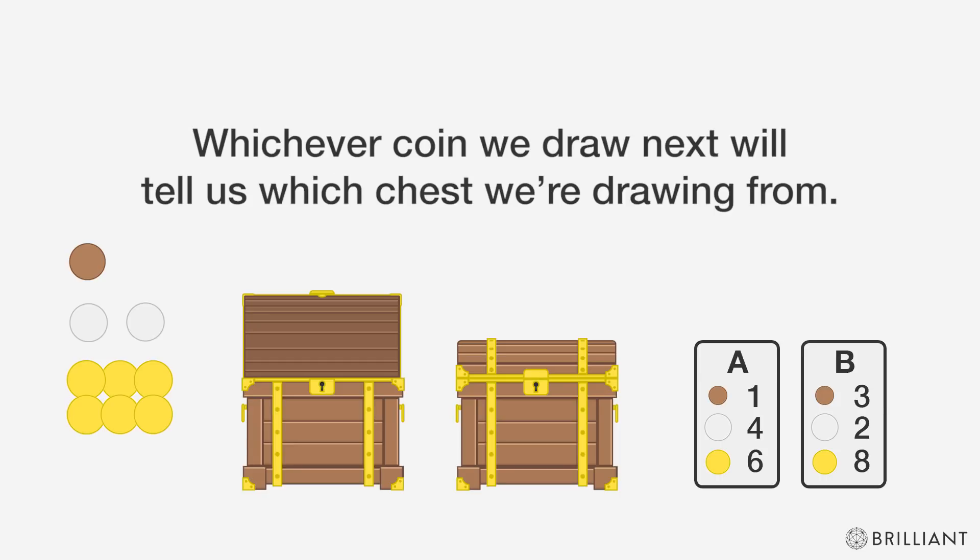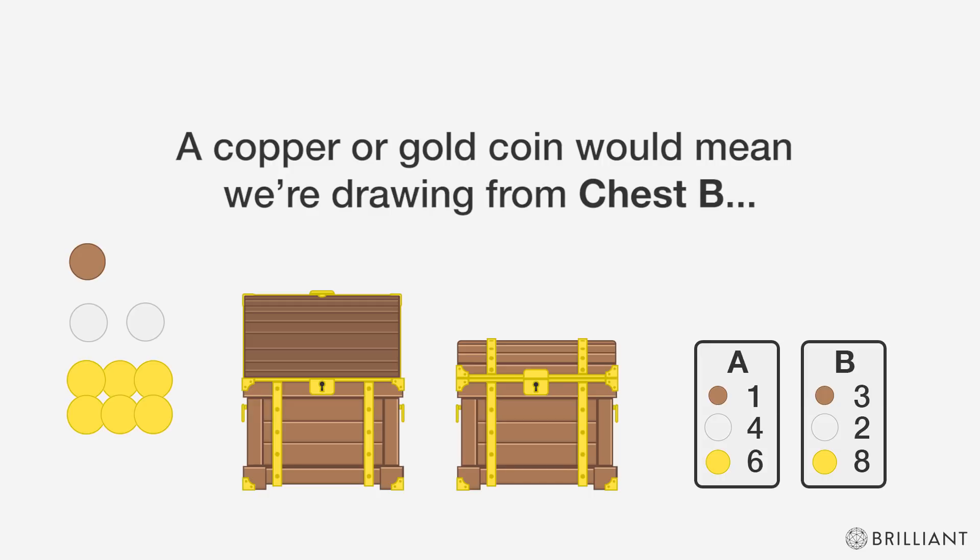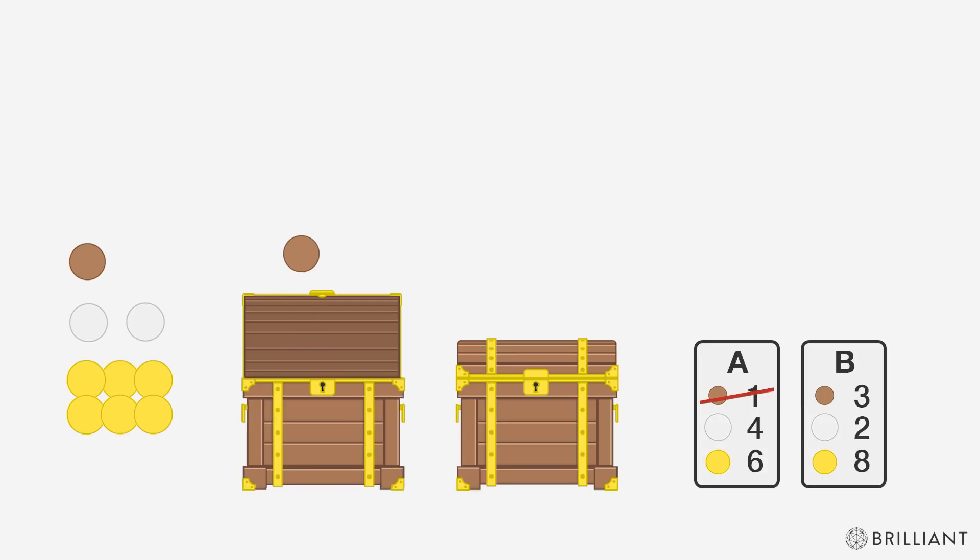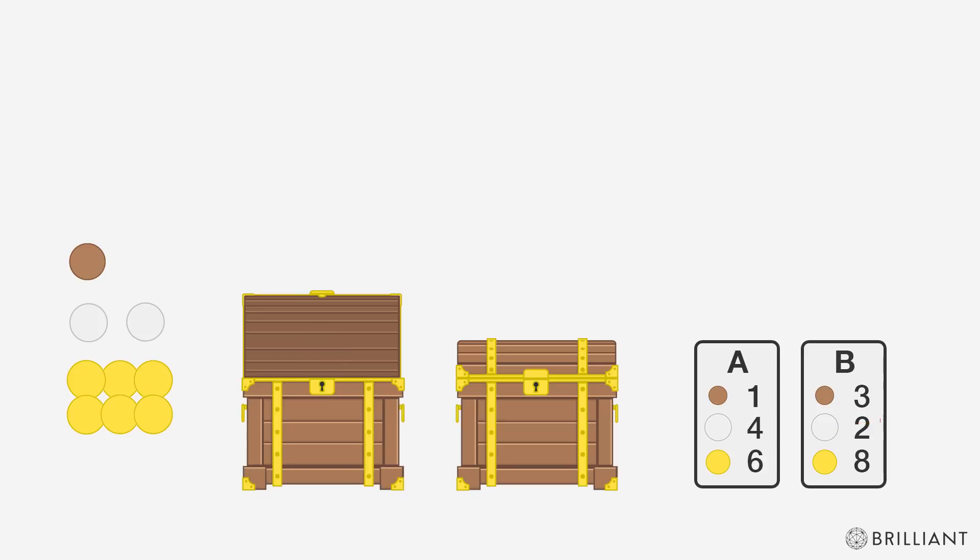Whichever coin we draw next though will tell us which chest we're drawing from. A copper or gold coin would mean we're drawing from chest B, because neither of these coins exist in chest A. While a silver coin would mean we're drawing from chest A, because there's only two silver coins in chest B.